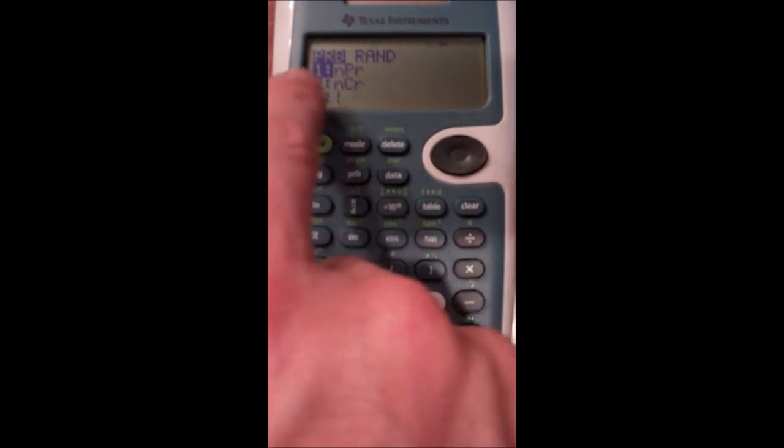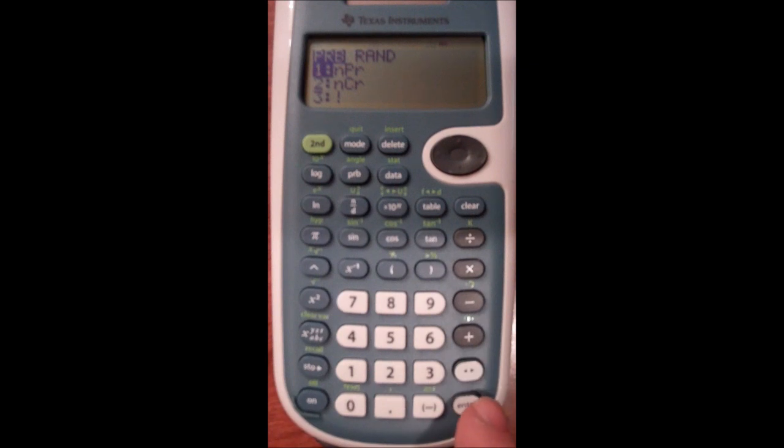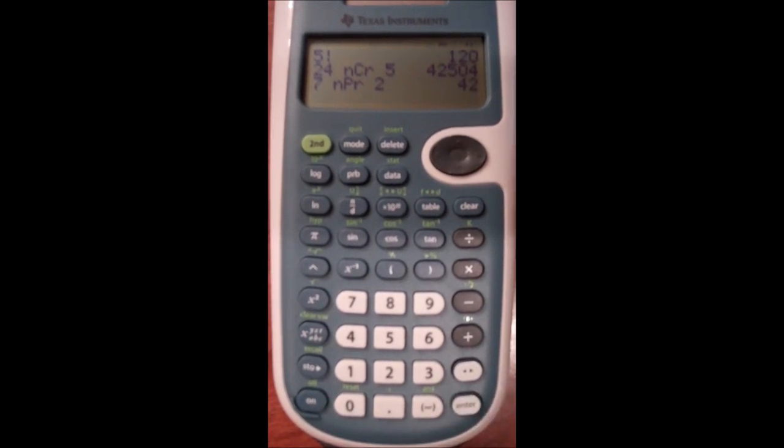I'd have PRB, and I want to use the NPR button this time for the permutations, so I can arrange them where order does matter two different ways. And I get 42 different ways that seven people could be elected into a chair and vice chair position.